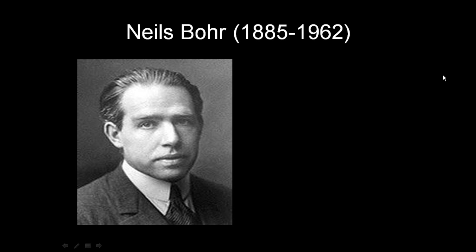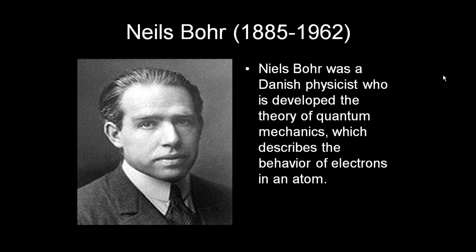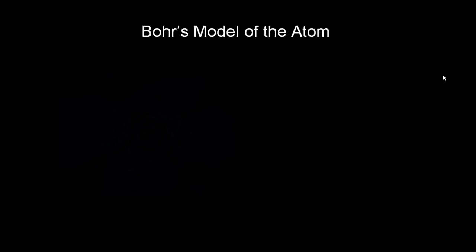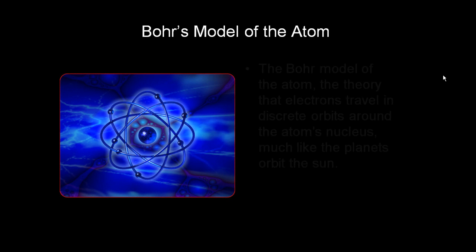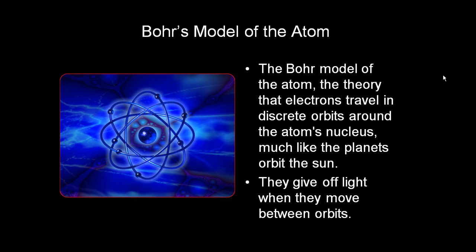A student of Ernest Rutherford was determined to understand how electrons were scattered throughout the atom. So Niels Bohr reviewed Isaac Newton's work, and he also worked with Albert Einstein to come up with the theory of quantum mechanics, which describes the behavior of electrons and atoms. Based on Niels Bohr's research and what we now know about light, the Bohr model of the atom says that electrons are traveling around the nucleus in discrete orbits, much like planets orbit the sun. They give off light when they move between these orbits.